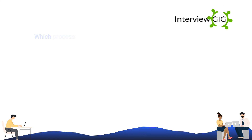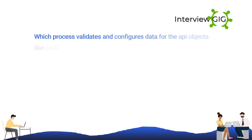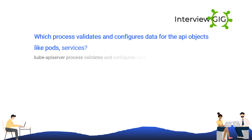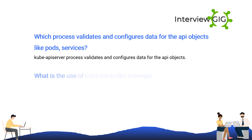Which process validates and configures data for the API objects like pods and services? The Kube API server process validates and configures data for the API objects.